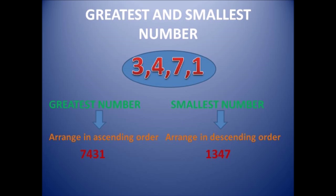If I give you certain digits and ask you to form the greatest and the smallest number, what will you do? For example, on your screen I have shown four digits: 3, 4, 7, and 1. To form the greatest number using these digits, just arrange them in descending order — as I have done: 7, 4, 3, 1 — so the number formed is 7,431, and this is the greatest number. To form the smallest number, you arrange the digits in ascending order: 1, 3, 4, 7 — giving 1,347, which is the smallest number.